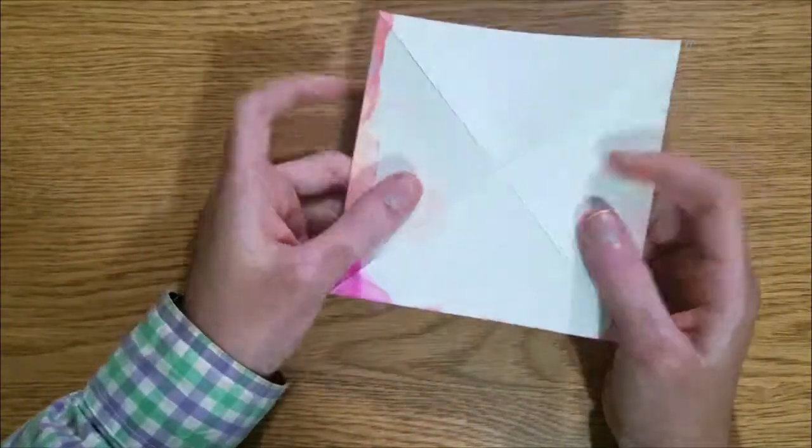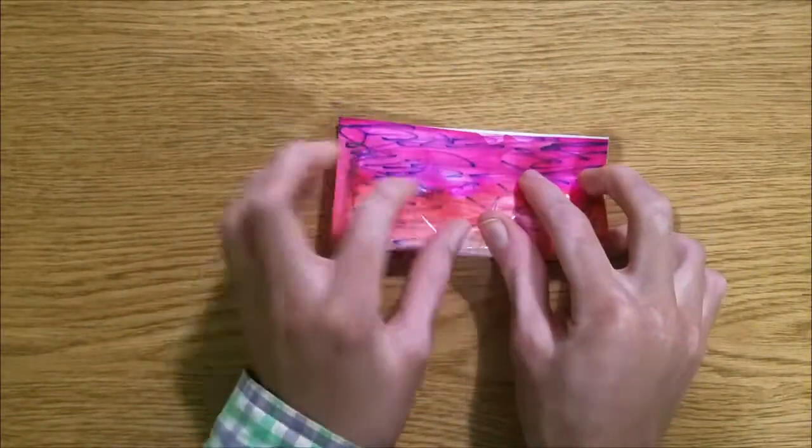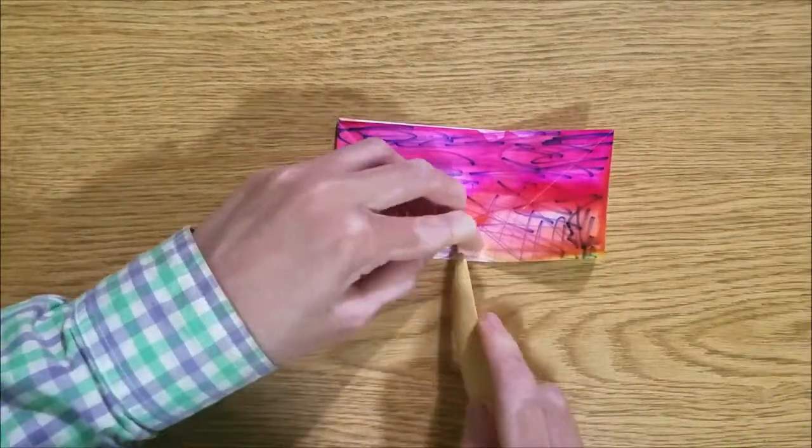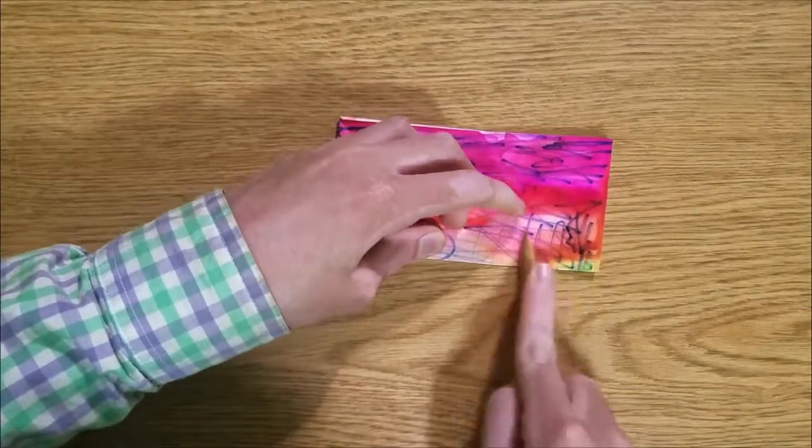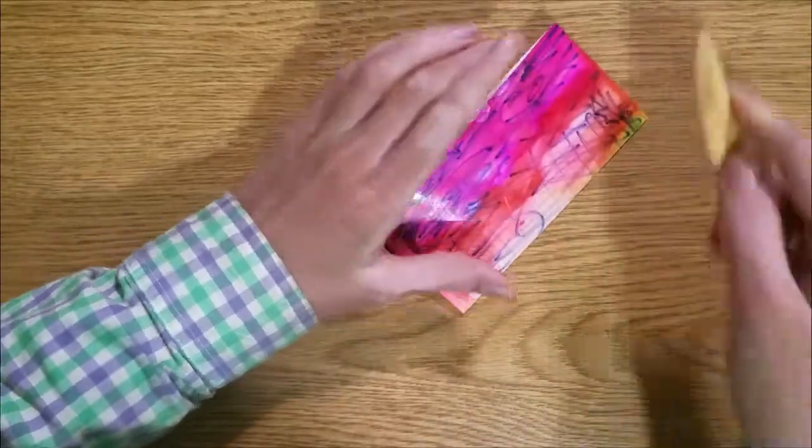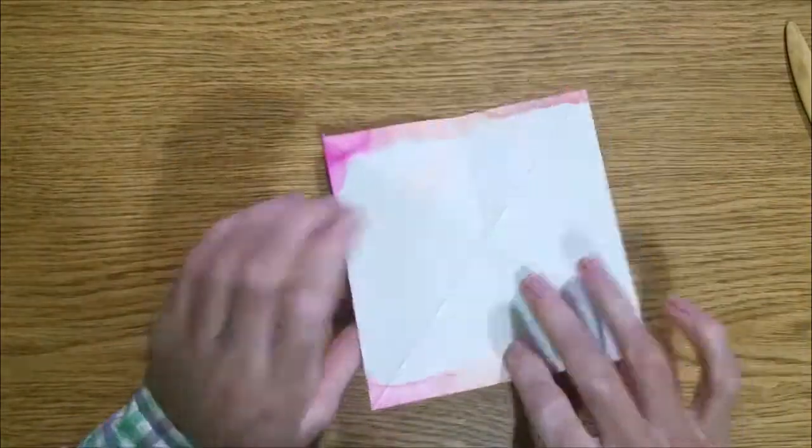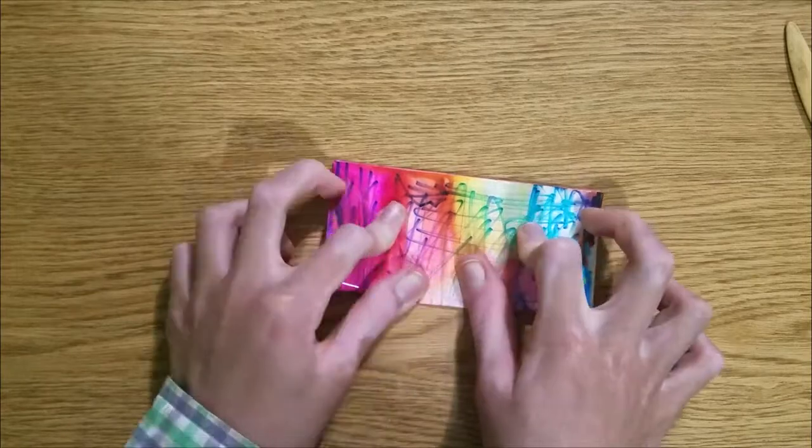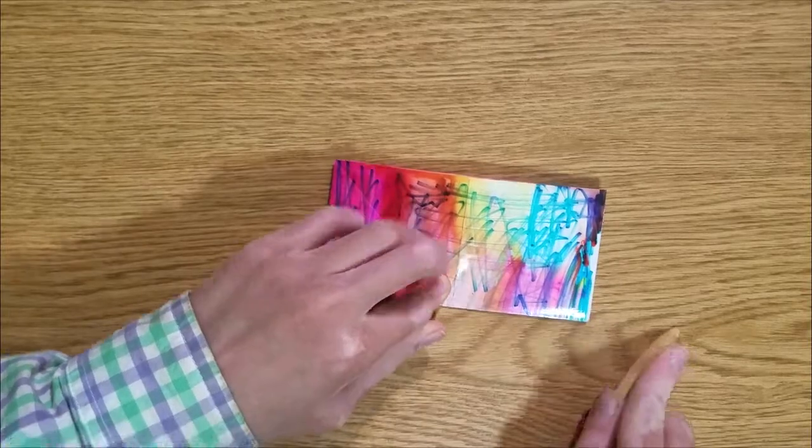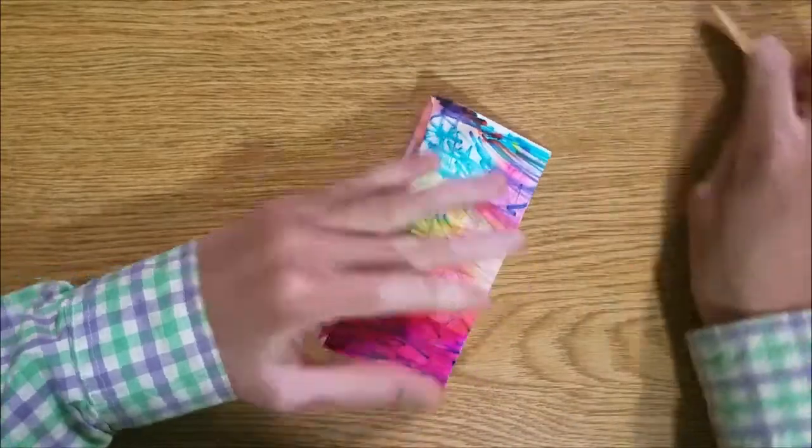Now let's turn the paper over on the white side and fold in half in both directions. I think this will be handy now. Now this way. There we go. Unfold.